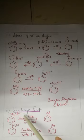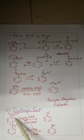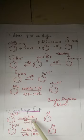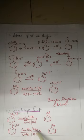The next reaction is the Sandmeyer reaction. Benzene diazonium chloride reacts in the presence of copper chloride and HCl to give chlorobenzene. If copper bromide and HBr are used instead, bromobenzene is obtained.